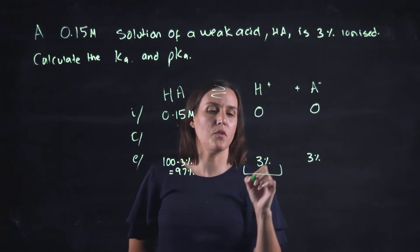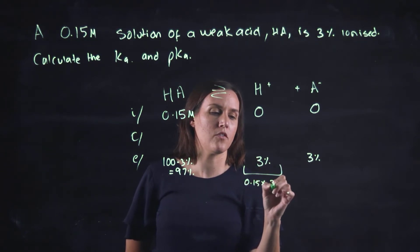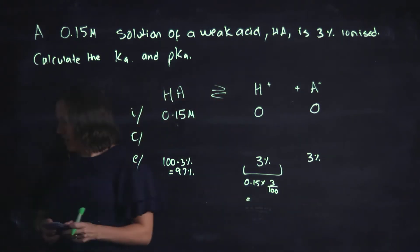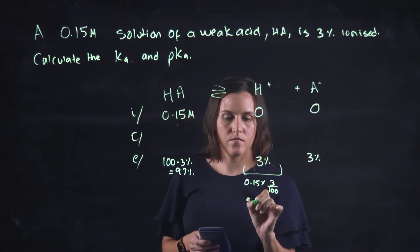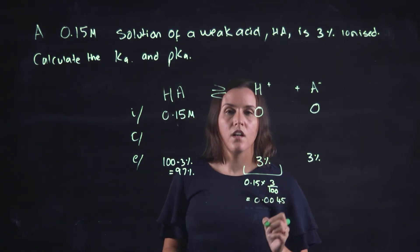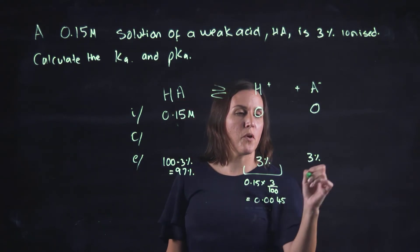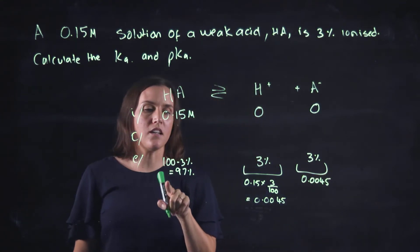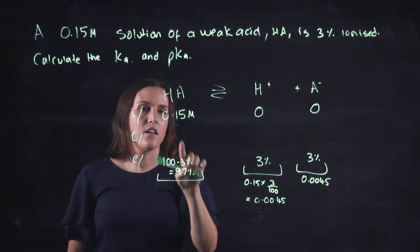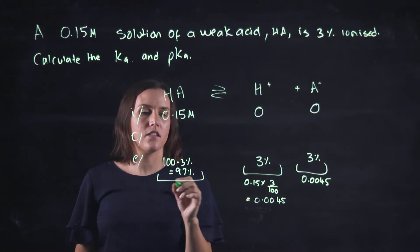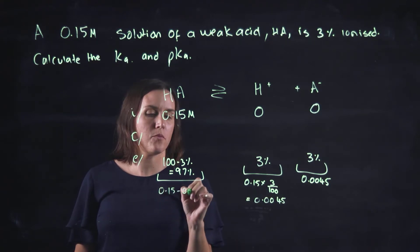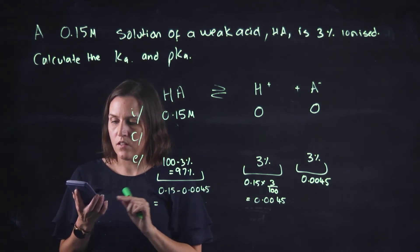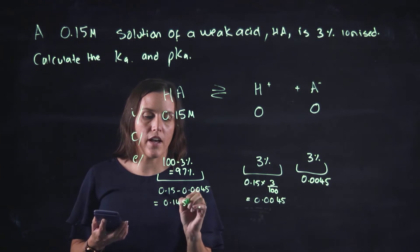At equilibrium we have 3% ionized, so what is 3% of 0.15? I go 0.15 times 3 divided by 100 on my calculator and I get 0.0045. So both H⁺ and A⁻ will be 0.0045. The remaining HA is 97%, so 0.15 minus 0.0045 gives 0.1455 molar.